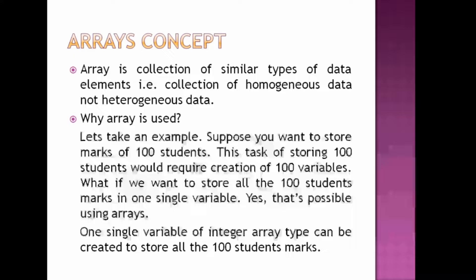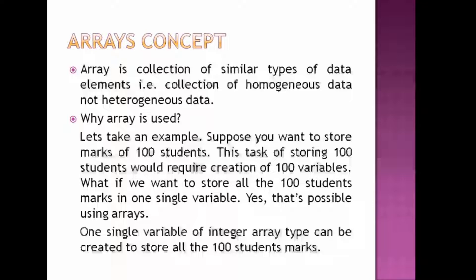By definition, an array is defined as a collection of similar types of data elements — that is, a collection of homogeneous data, not heterogeneous data. So what do we mean by similar types of data? All the marks of 100 students, for example, will be of the same type.